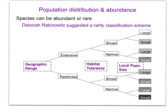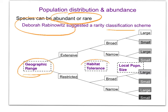A classification scheme suggested by researcher Deborah Rabinowitz looks at how abundant or rare a species is by examining three factors: geographic range, habitat tolerance, and local population size. Species can vary across these three factors — they may have an extensive or restrictive range, their habitat tolerance may be broad or narrow, and their population sizes may be larger or smaller. These are relative terms within any particular habitat, and this scheme has clear conservation implications.